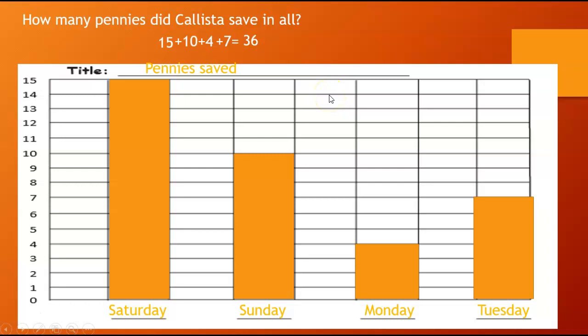When you're doing these problems, you need to be showing your work, just like I'm doing here. I have 15 plus 10 plus 4 plus 7 equals. You're not showing me your work, and you're getting it confused because you're not actually working it out on your paper. Show me your work so that I know how you got your answer.